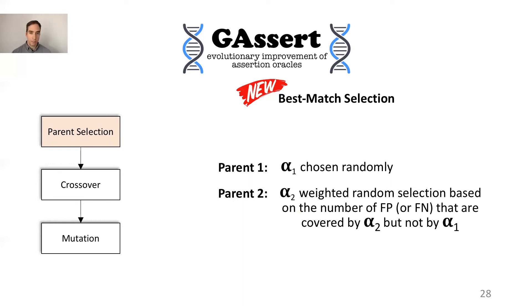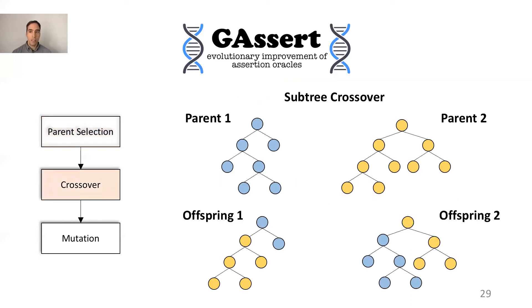Besides tournament selection, J-Assert uses another parent selection criterion that we presented in this paper, which is specific to the oracle improvement problem. We call it best match selection. It chooses the first parent randomly. Then for the second parent it chooses with a weighted random selection, using as weight the number of false positives that are not covered by the first parent. If we are evolving the population with FN dominance, we consider the false negatives instead. For the crossover we use the canonical one that picks a node in each parent and substitutes the resulting subtrees.